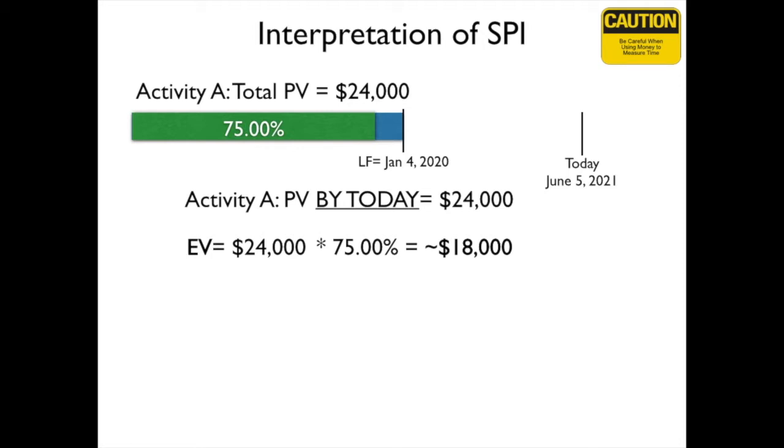However, we're only 75% done, so we have an earned value of $18,000. Now, even if we are 18 months late, we're still going to have a SPI of 0.75. That certainly indicates that we are behind schedule.